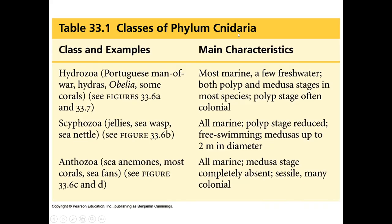Classes of Phylum Cnidaria. Class and examples: you have Hydrozoa — these are your Portuguese man-o'-wars, your hydras, and some corals. Then you have your Scyphozoa — these are your jellies, your sea wasps, and your sea nettles. Then you have your Anthozoa — these are your sea anemones, where Nemo lives. Most of your corals are here, and your sea fans. Hydrozoa are mostly marine with a few freshwater; there's a polyp and a medusa stage of these species.